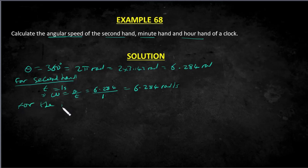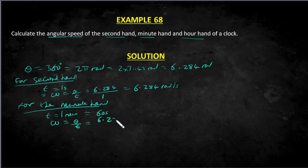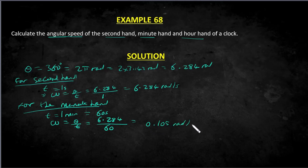For the minute hand, it rotates 360 degrees every one minute, and one minute equals 60 seconds. So the angular velocity is ω = θ/t = 6.284 / 60 = 0.105 radians per second. You can see the second hand moves faster than the minute hand.